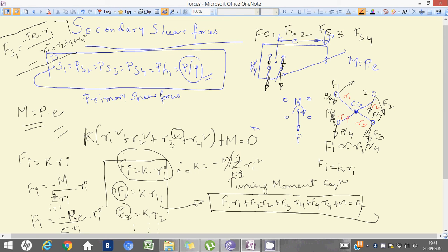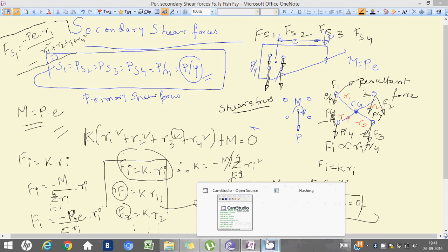So, since two forces are acting, we can find the resultant, that is resultant force, for all the points, for rivet 1, rivet 2, rivet 3 and rivet 4. In the next video, we will see how to find out the resultant forces and finally, validating our equation with shear stress. That will be the last part for eccentrically loaded rivet joints. Thank you.